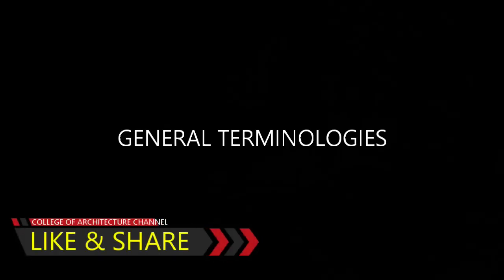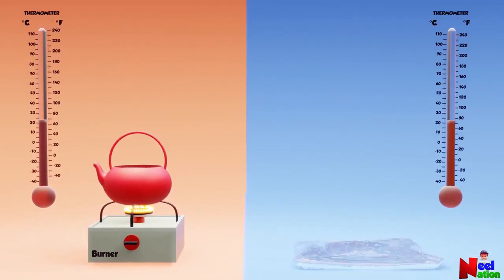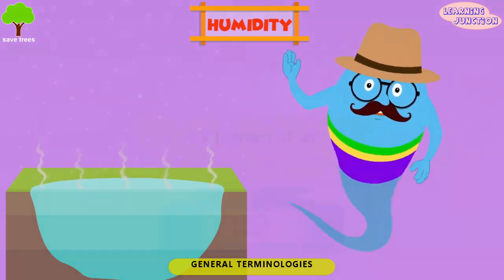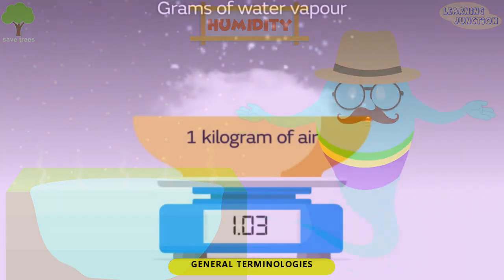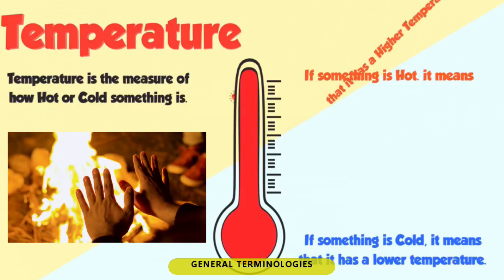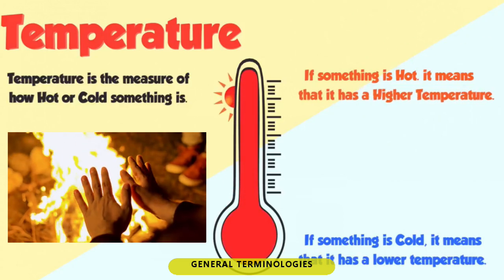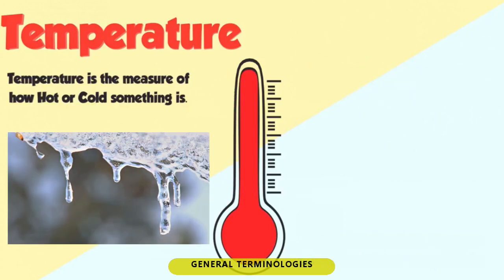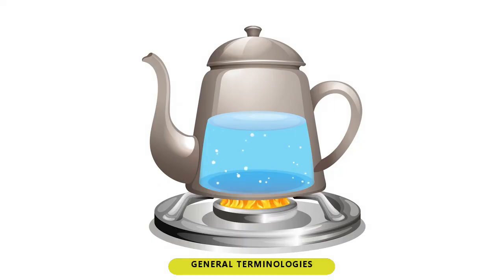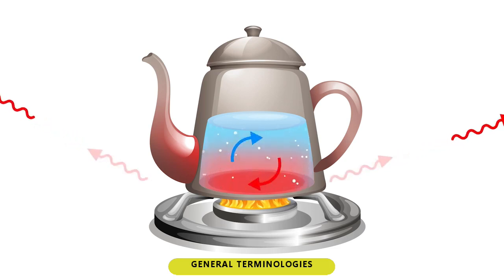General Terminologies. Temperature: the measure of hotness or coldness of a matter. Humidity: amount of water vapor in the air. Hot: a high thermal energy causing a high temperature. Cold: a low or non-thermal energy causing a low temperature. Heat: is the transfer of thermal energy between two objects with different temperatures.